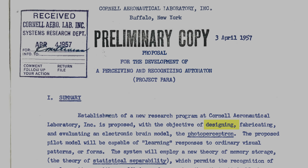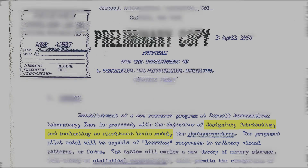Scientists built a few working perceptrons, as these artificial brains were called. April 1957. This is a receipt from the lab acknowledging the report, and here is what it says about the project: designing, fabricating, and evaluating an electronic brain model. We've been trying to figure out neural networks for a long time.